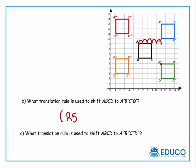So I move right, 5 jumps, and then I move 1, 2, 3, 4 jumps down. So down, 4 jumps. And that's our translation rule for that one.